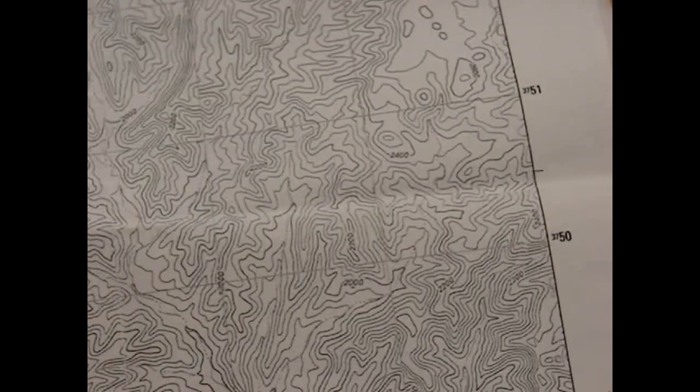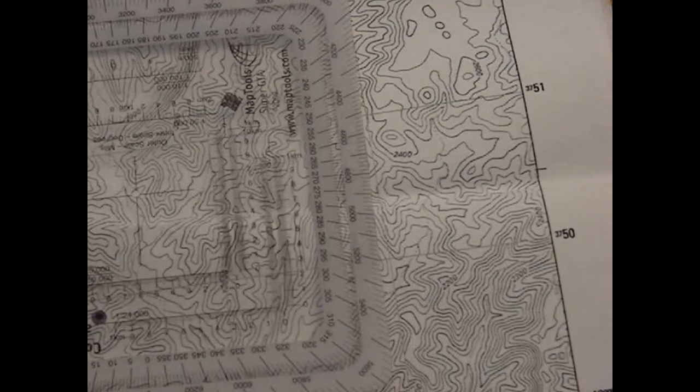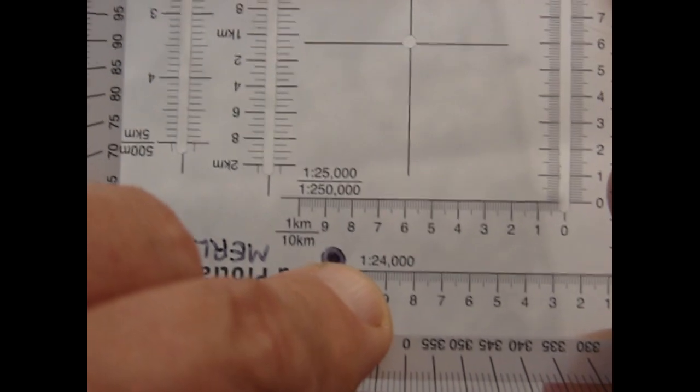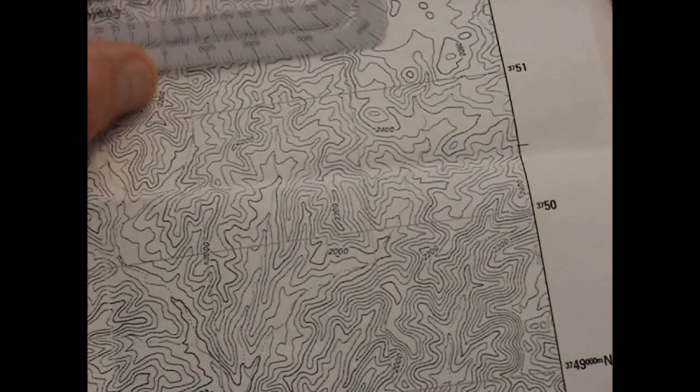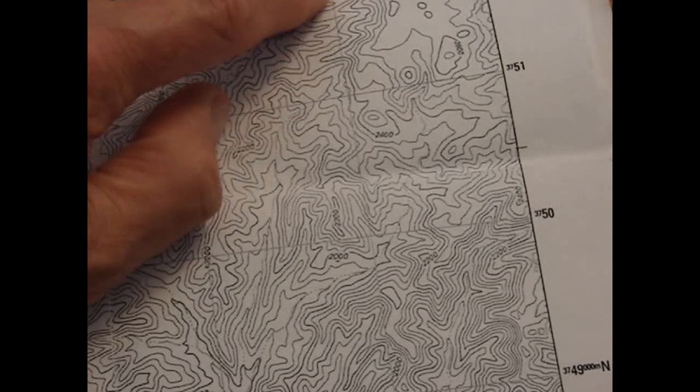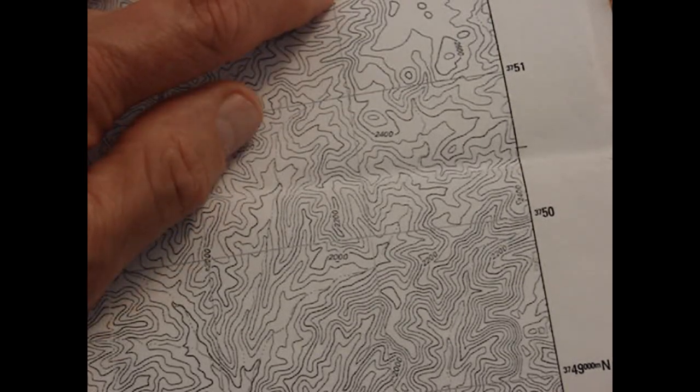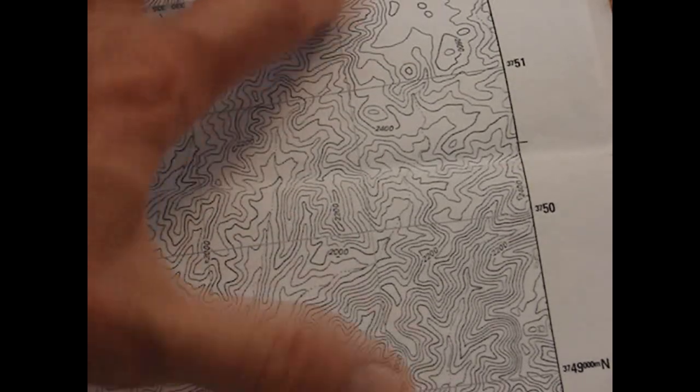So what we want to do is get the protractor out and we want to put, making sure that we have our scale here at 1:24,000. Let me zoom that out so you can see it matching our map. We want to put the zero zero mark right on the northing and easting line of that grid, which is 99, 52.